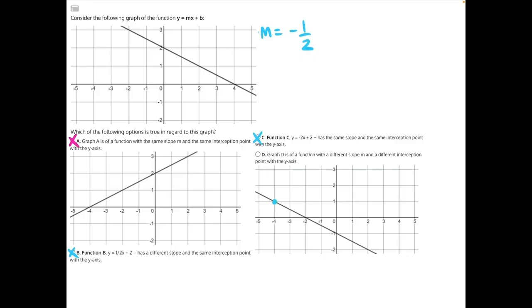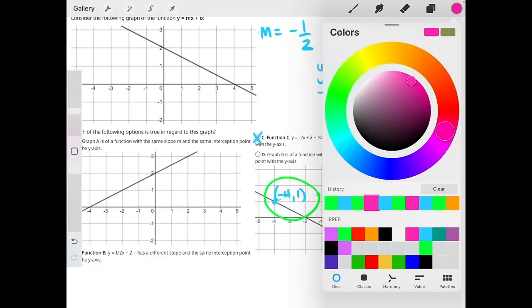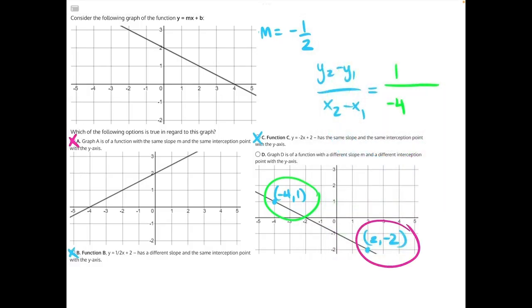We could use (negative 4, 1) here, and we could do (2, negative 2). We can plug both of those into our equation again, y2 minus y1 over x2 minus x1. I will use this coordinate point for my y2 and x2, so we will have 1 and negative 4. Then I will use this coordinate point for my y1 and x1. We'll have minus negative 2 and then minus 2.